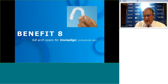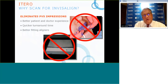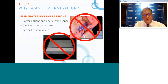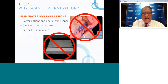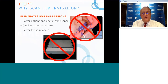Benefit number eight: full arch scans with Invisalign. Invisalign actually uses 3D printing — specifically stereolithography — to make a physical model, on which thermoplastic material is pressed to create a clear aligner. Digital iTero scans eliminate the unpleasant PVS impression experience, creating a better patient and doctor experience. There is quicker turnaround for ClinCheck — the virtual representation of tooth movements — and better fitting aligners.